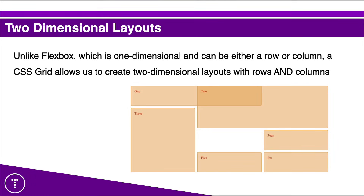With Flexbox, you have the ability to create one-dimensional layouts with either a row or a column — you use flex-direction and set it to row or column. But with CSS Grid, it's more powerful where we can create two-dimensional layouts and use rows and columns in the same grid. We also have the ability to span certain rows or columns, and it's just a better option, especially for more sophisticated website layouts and user interfaces.